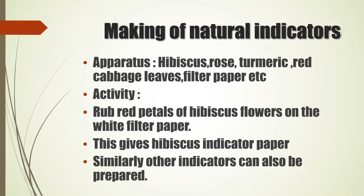Let us study how to make natural indicators. The apparatus required: hibiscus (shoe flower), rose, turmeric, red cabbage leaves, filter paper, etc. Rub the red petals of hibiscus flower on white filter paper — this gives hibiscus indicator paper. When you rub hibiscus or shoe flower on white filter paper, the paper will turn somewhat reddish in color, and that is called hibiscus indicator paper.